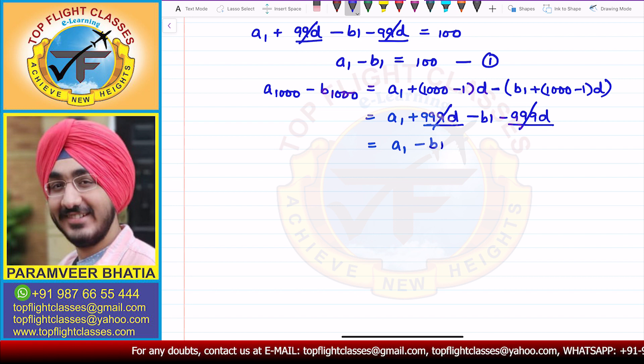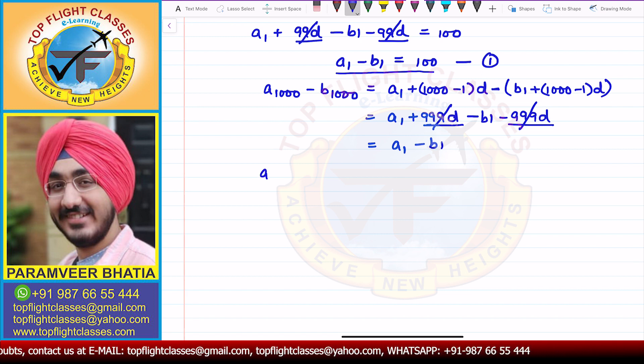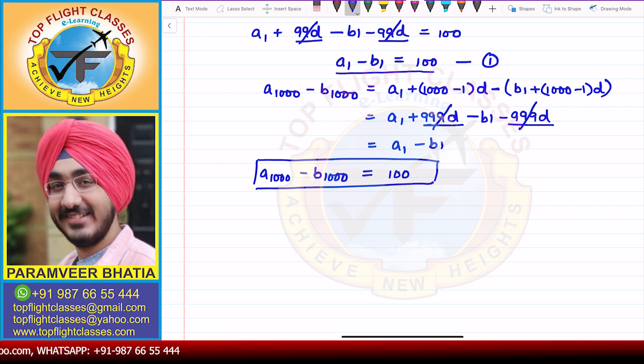Now if we look at the first equation. In the first equation, what is the value of A1 minus B1? 100. So therefore, A1000 minus B1000, that is the difference between the 1000th terms of the AP, that is also equal to 100. And this is what is required in the question.